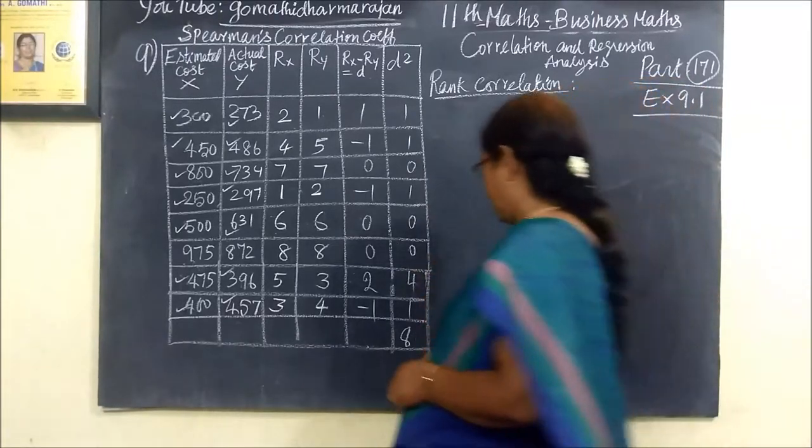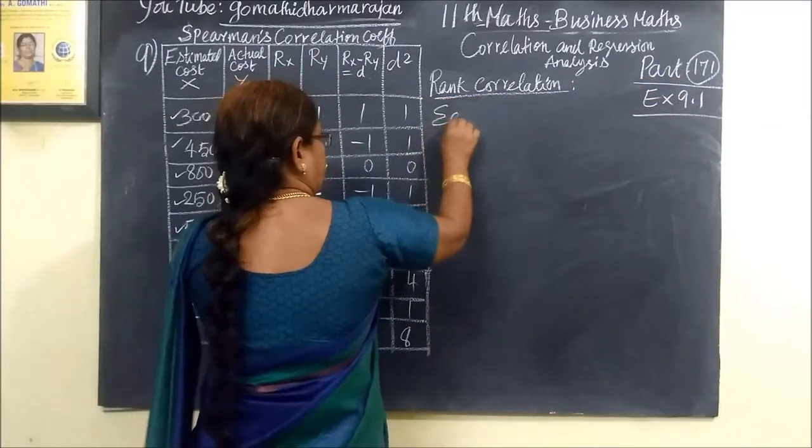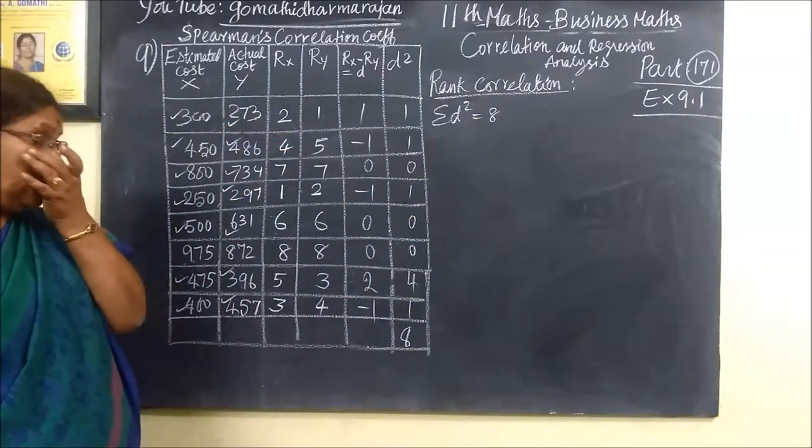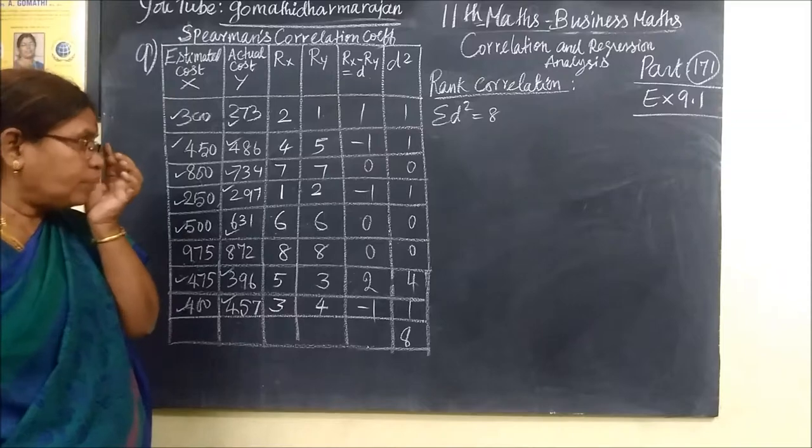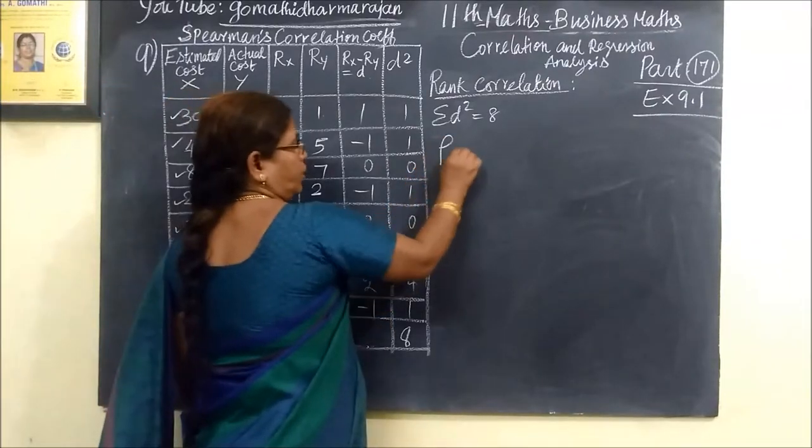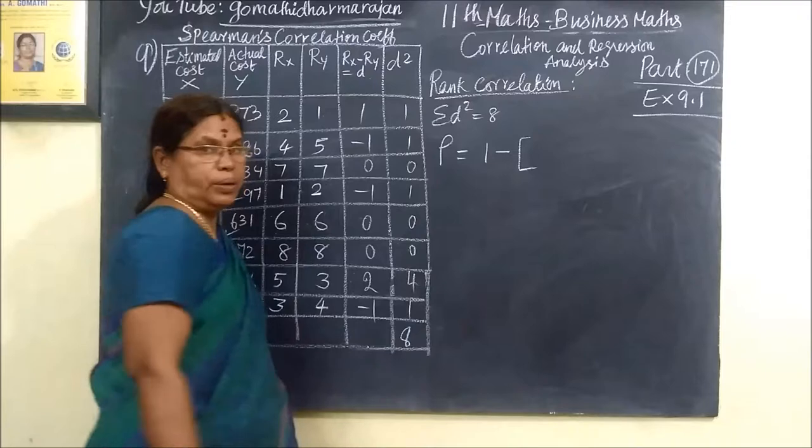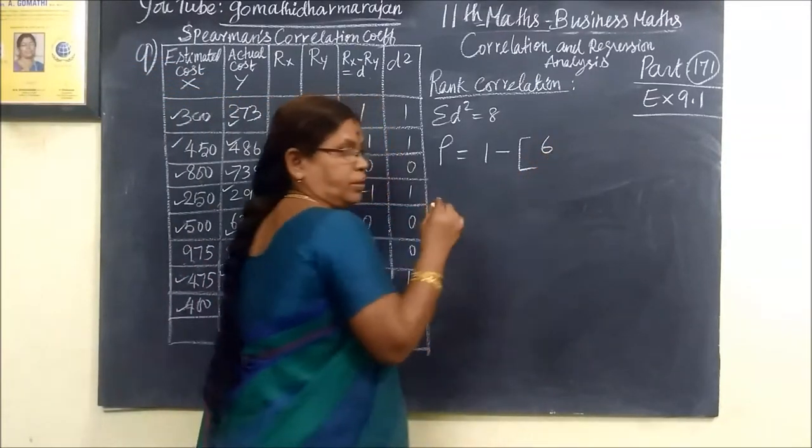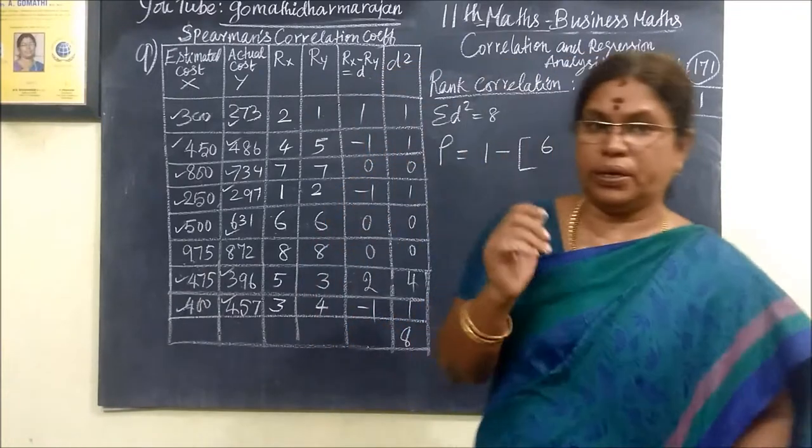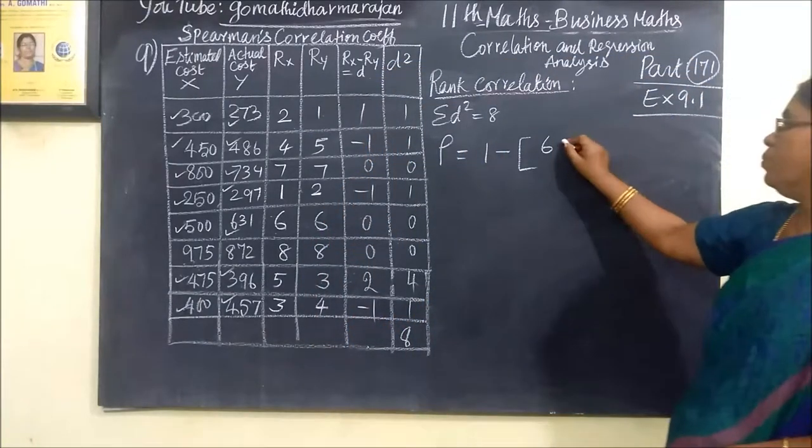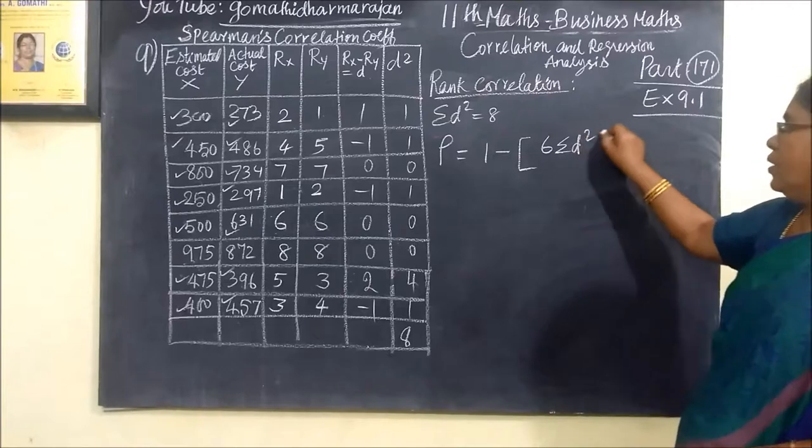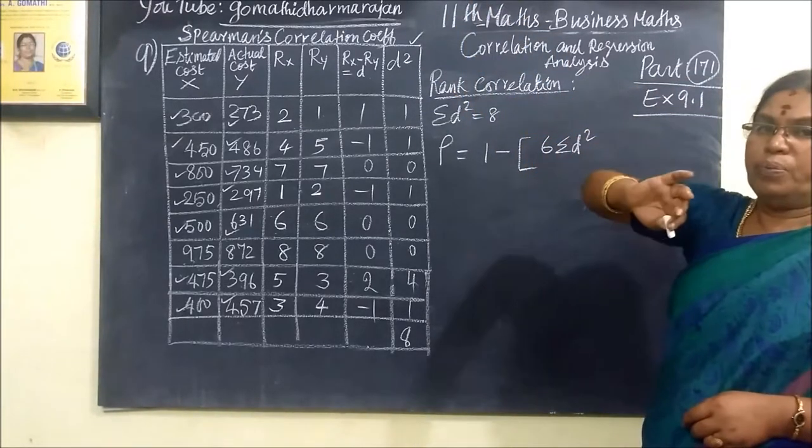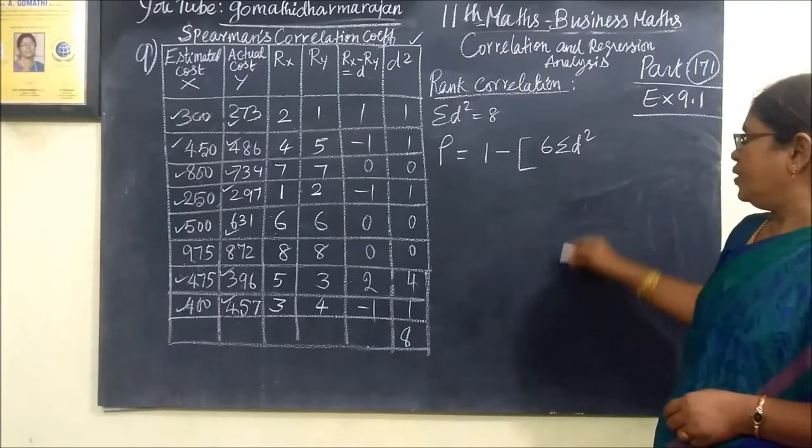Sigma D square equals 8. So sigma D square equals 8. Now, rank correlation, correct? How many formulas? Rho equal to 1 minus, and then the bracket on the bottom. So 6, how many? We remember 6, and then how many? Sigma D square. So this is the last column. We are selecting this last column. In all the formula, the last column is the last column. Sigma D square by...